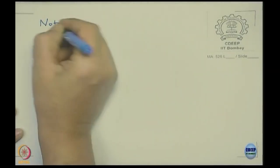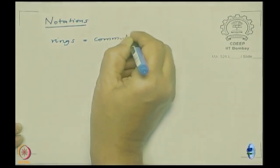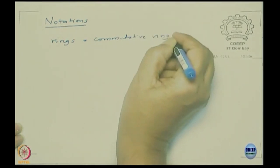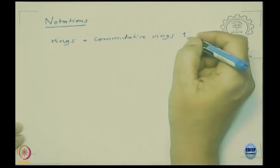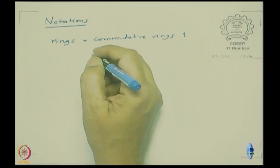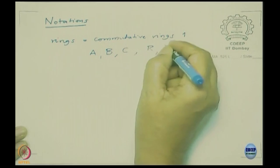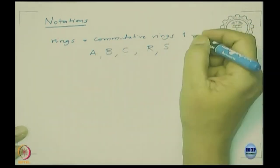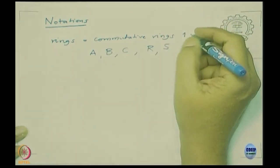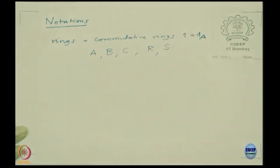Regarding notation: all rings in this course are commutative. I will also assume they have unity, which I write as 1. The notation for rings I will use normally is A, B, C and sometimes R, S. Usually I will use the letter A for the ring, and 1 is written as 1_A. When there is a chance of confusion I will specify.